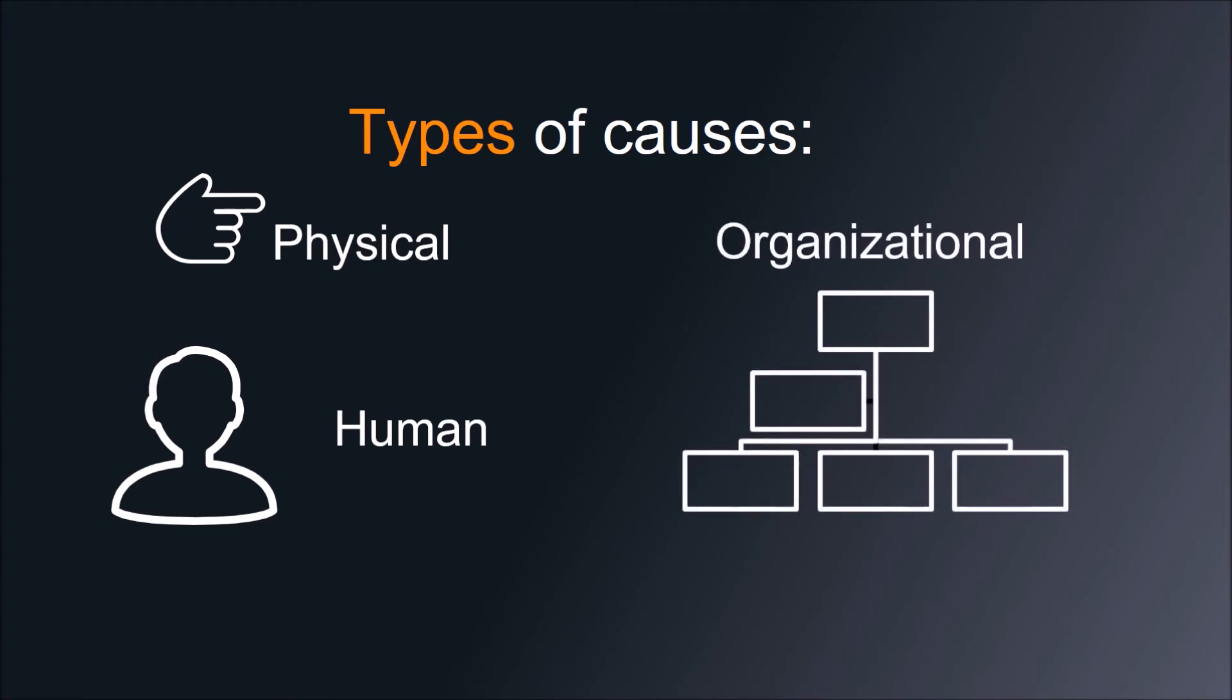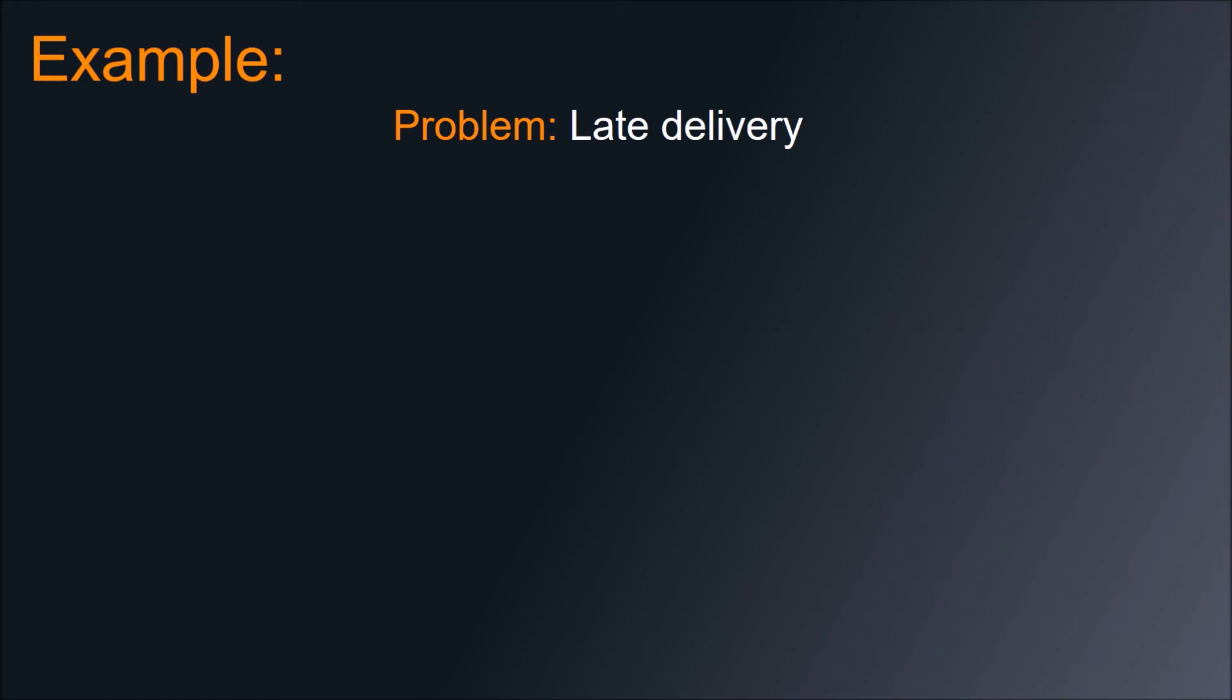For example, a courier company received a late delivery complaint. They may solve the problem by making the delivery for free. However, this would be a symptomatic solution or a quick fix to deal with a critical situation. Still and all, they need to apply RCA in order to prevent this problem from happening again.